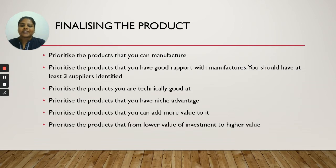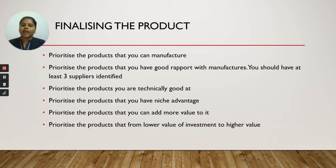Next is the product you can add more value to. The niche advantage is different from adding more value to it. For example, spirulina can be consumed in powder form, in tablet form — different value additions can be done. So if you know that this product you can add more value to, which will fetch more demand, more profit, and more buyers, you have to list it in that order.